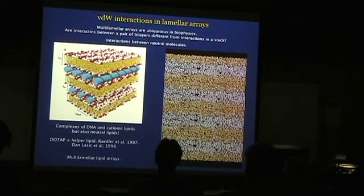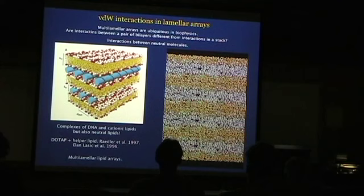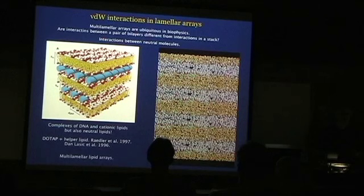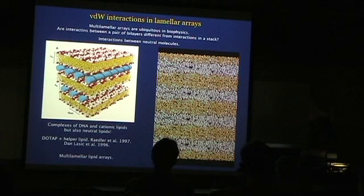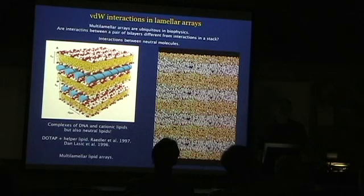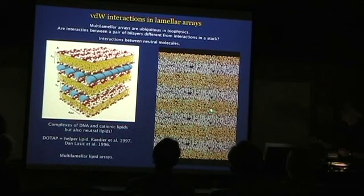The question is: what are the interactions in such a system? For van der Waals interactions, if you remember from the previous talk, I showed you a version of the Lifshitz formula for small separations. You saw that the interaction goes as 1 over d squared — the separation between semi-infinite media — but here we have finite-size chunks of matter interacting over a slab.